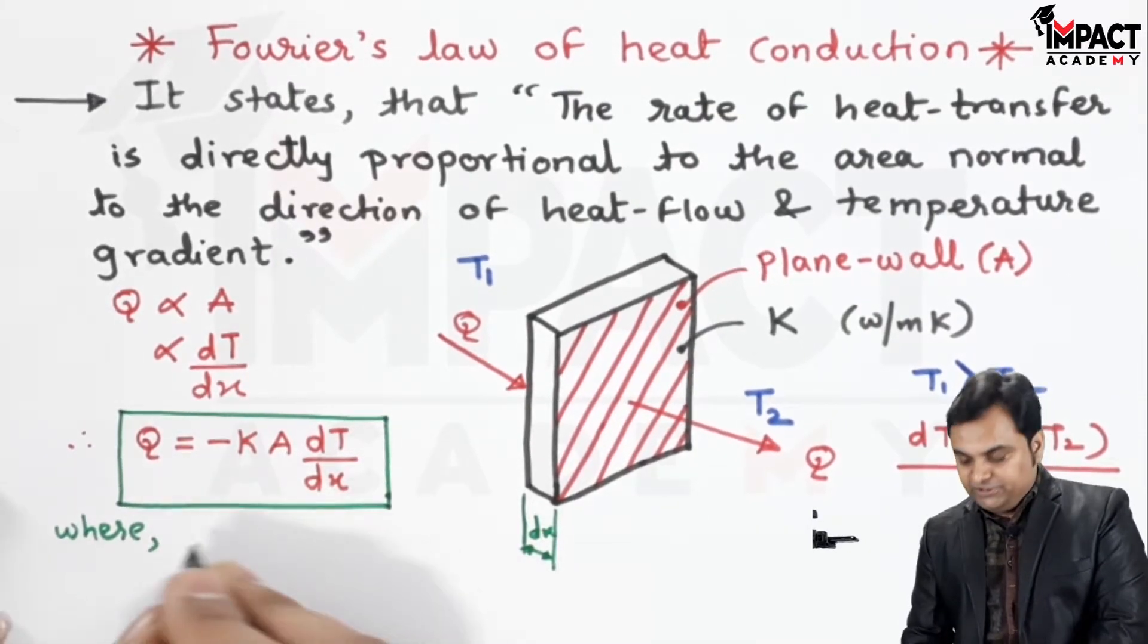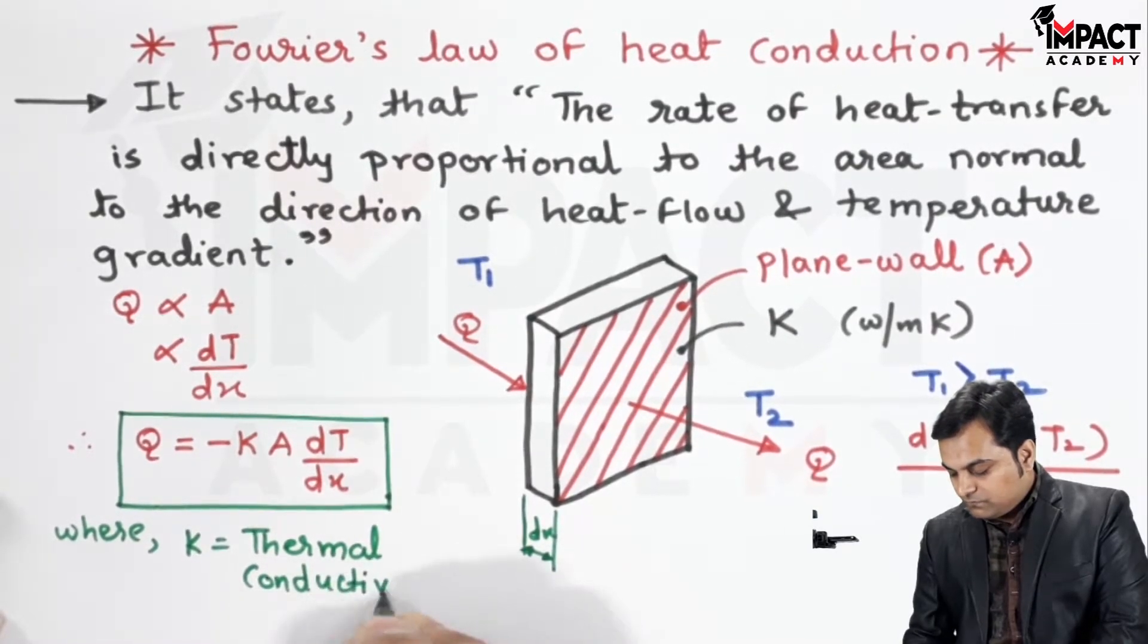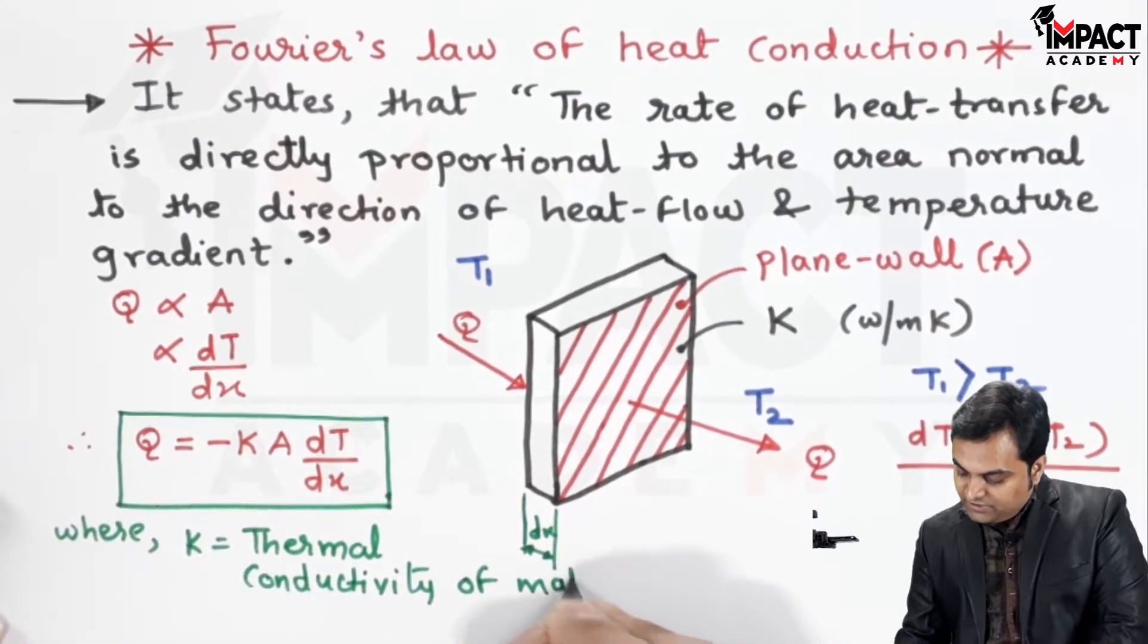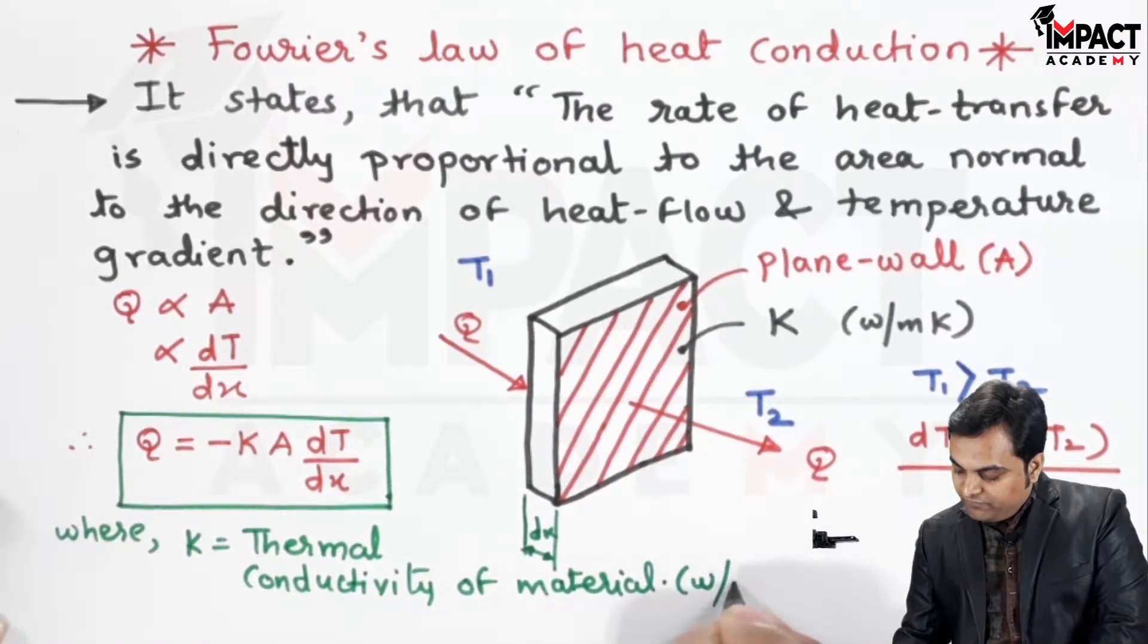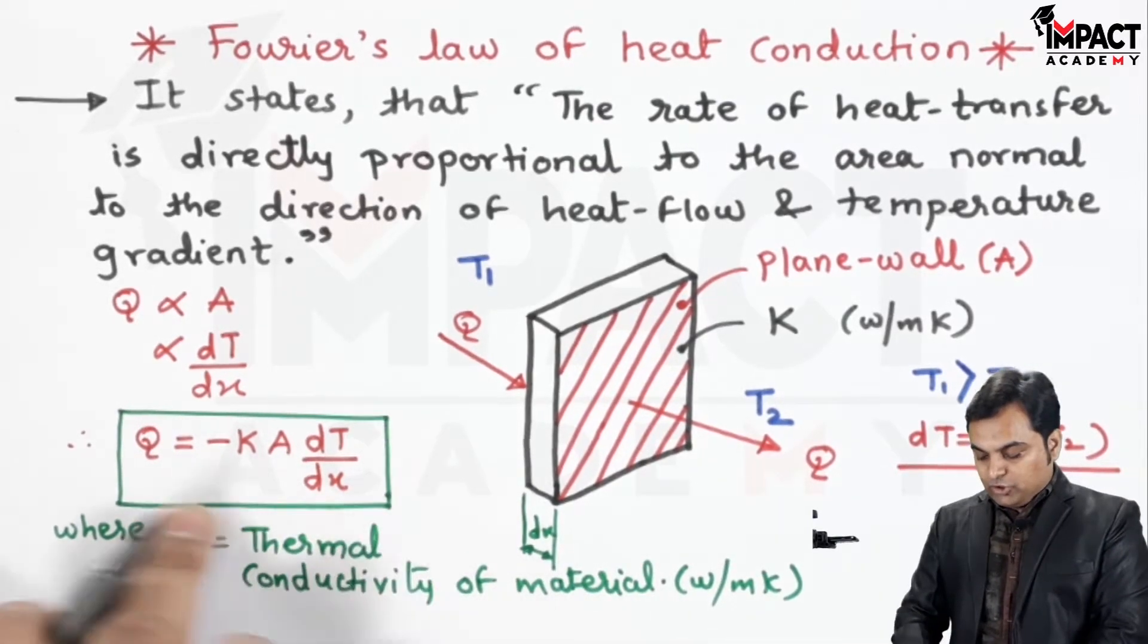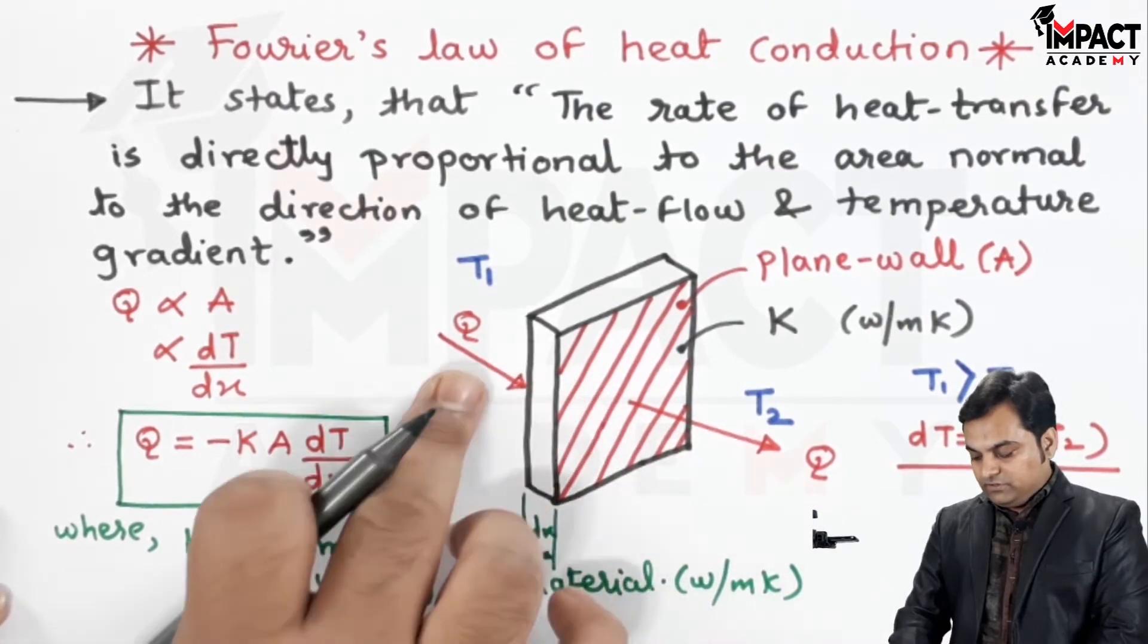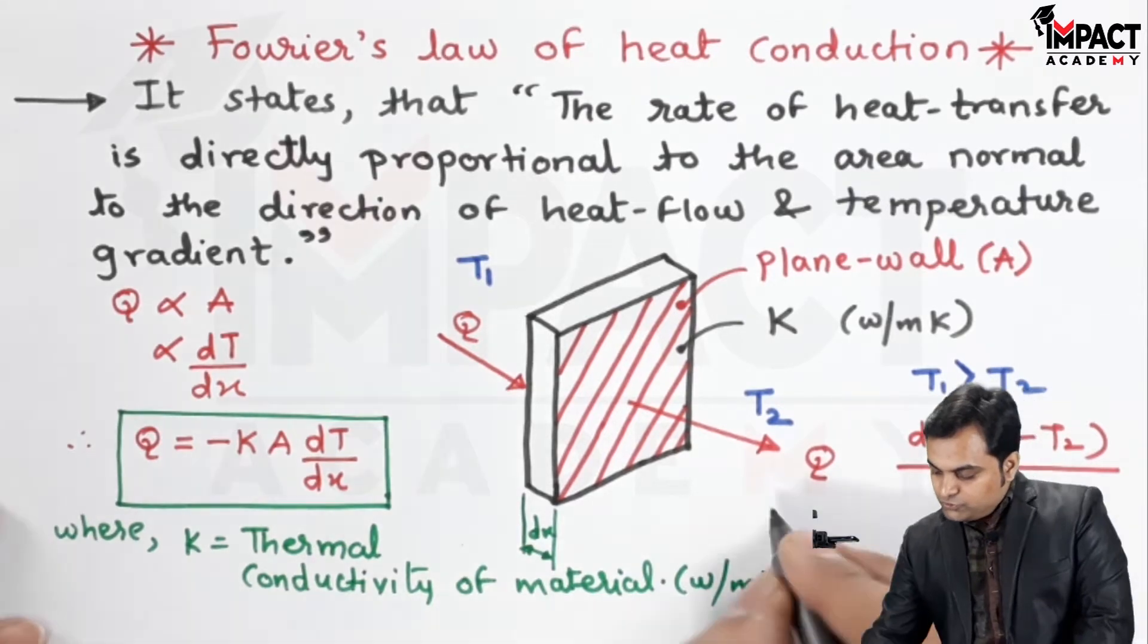Where this constant K is called as the thermal conductivity of material. Here the material is the wall. Thermal conductivity is denoted by watts per meter kelvin. Then negative sign indicates the drop in the temperature, that is the heat transfer continuously drops along the direction of flow.